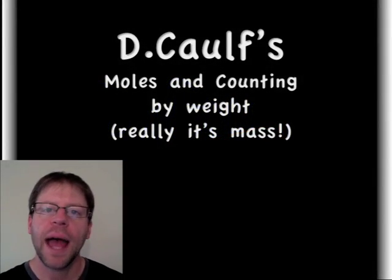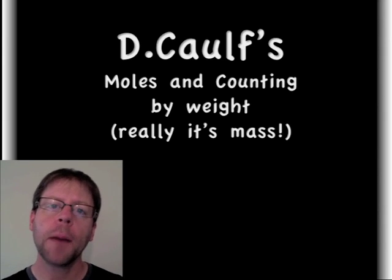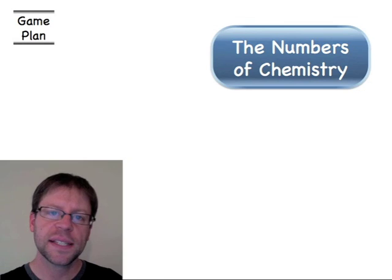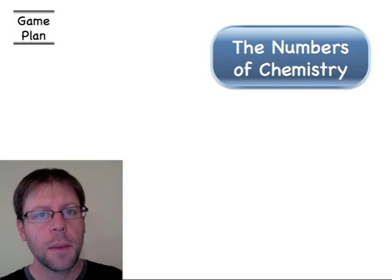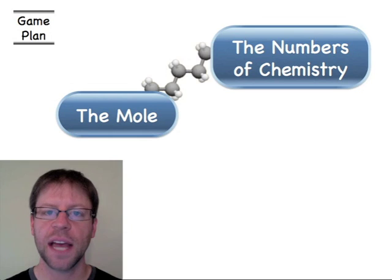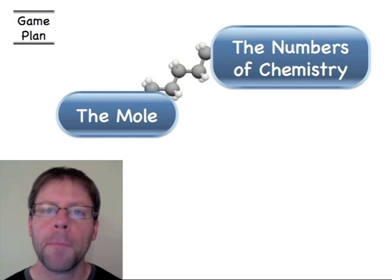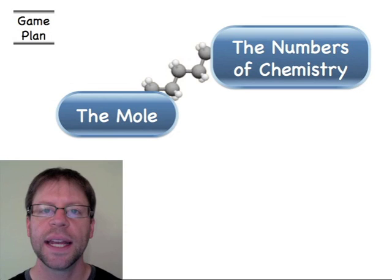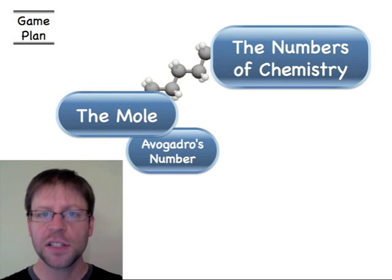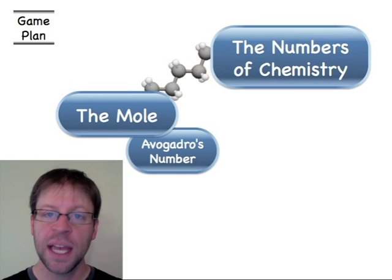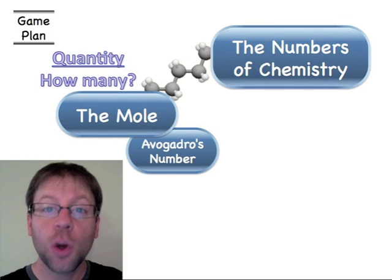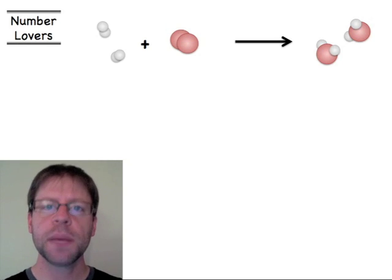Hello chemistry students. Today we're going to talk about how we work the numbers in chemistry — how we figure out how many things we are dealing with. Chemistry is a subject of numbers; everything we do comes down to the number of this that reacts with the number of that. Because atoms are so very tiny, we can't just go around counting them, so we have to introduce new concepts and strategies. I'm going to introduce something called the mole, which is absolutely fundamental, and it's closely related to a famous number we call Avogadro's number. Both of these help us quantify our atoms in chemistry.